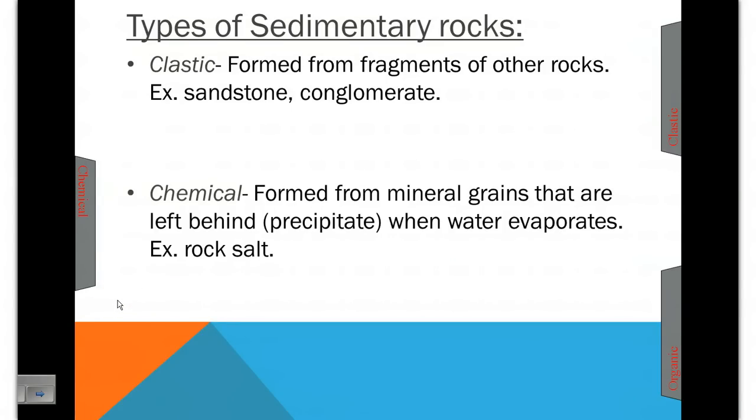Chemical rocks are evaporates. They form when minerals are left behind when water evaporates. So an example is like rock salt.